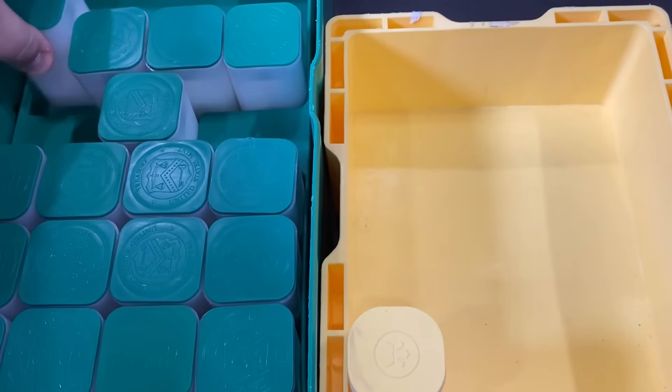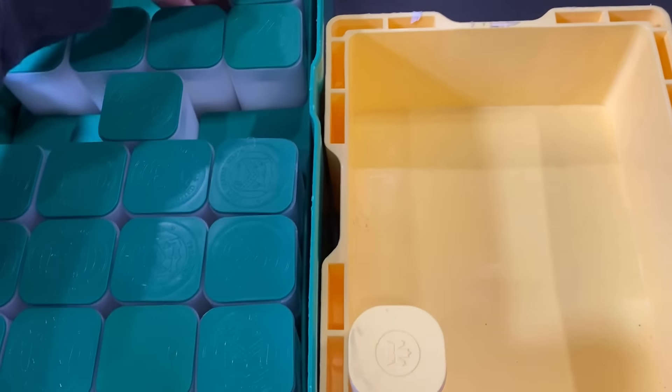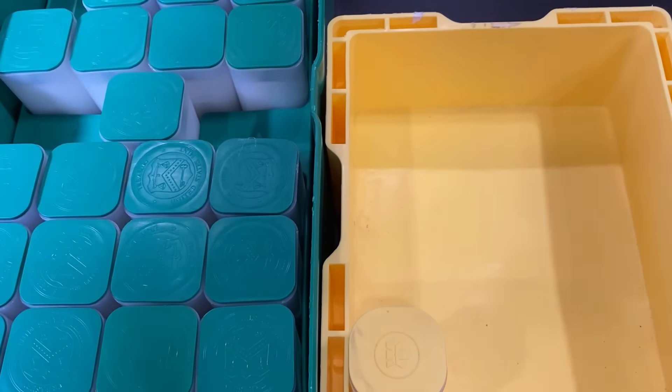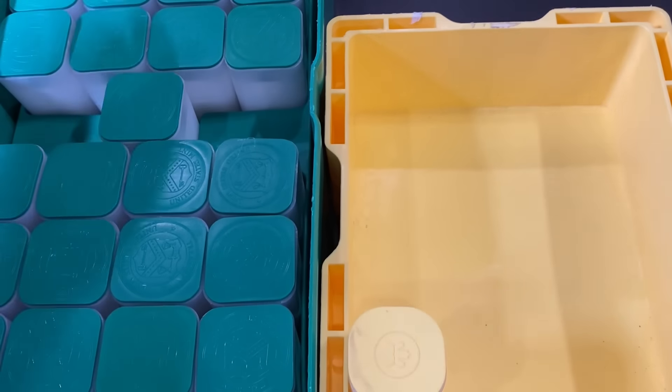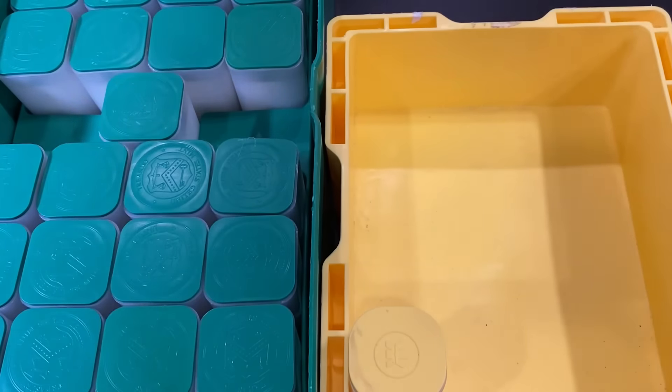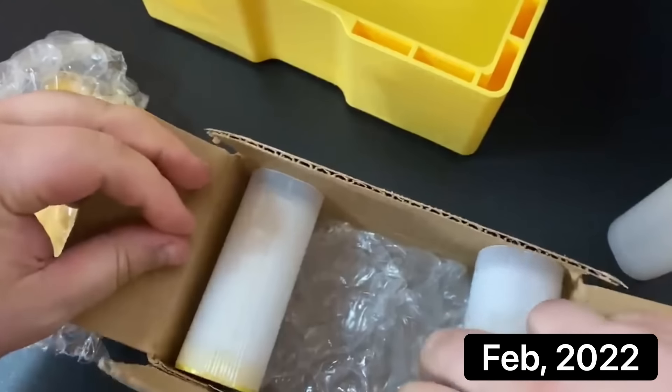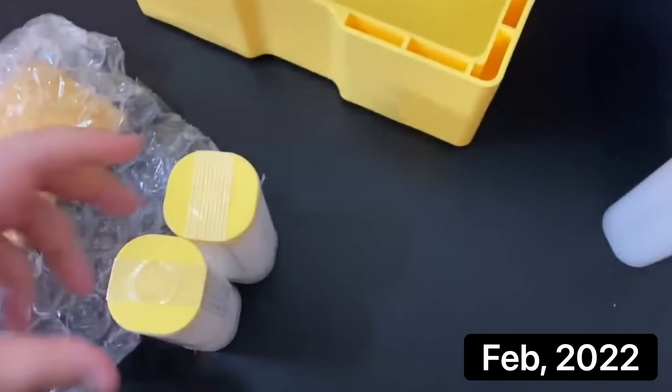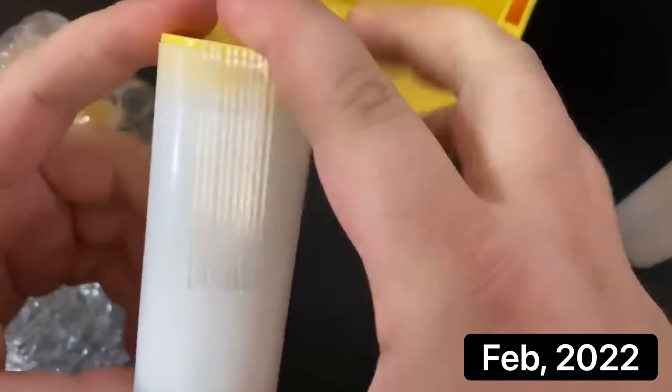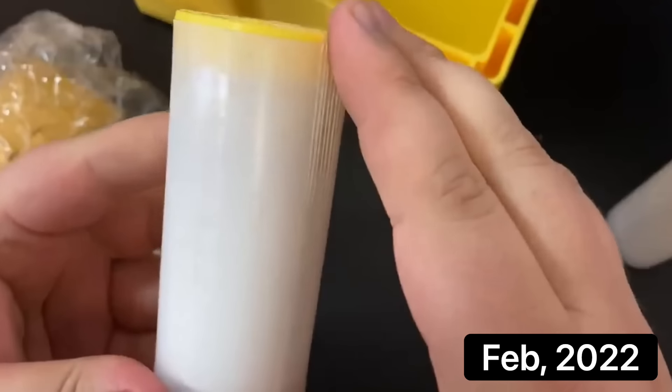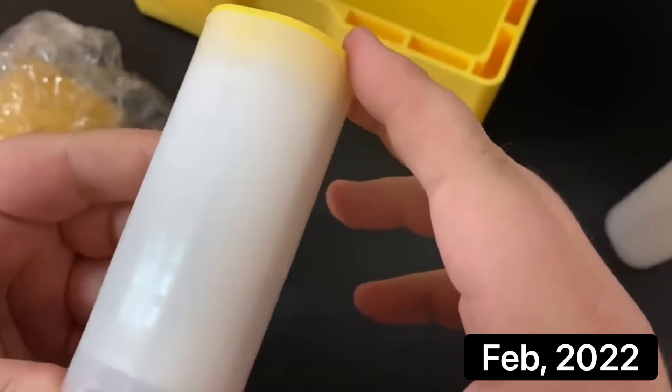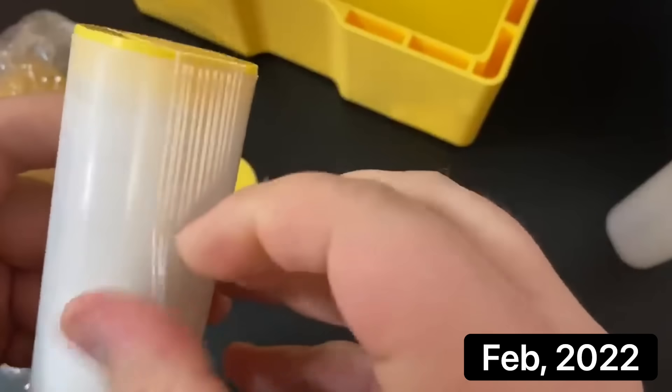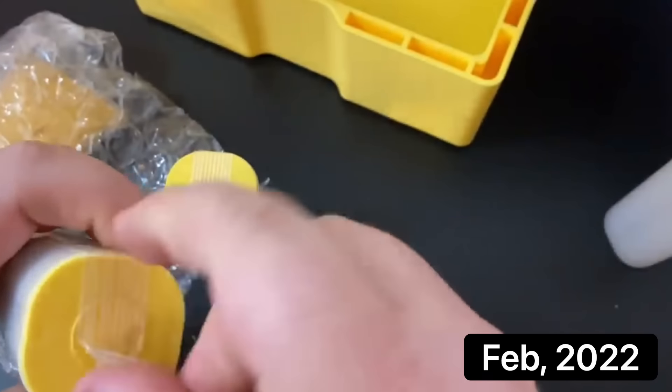And after I completed the American Silver Eagle monster box, I moved on to a few other stacking goals, and eventually I got around to stacking the Maple Leafs. And I started stacking these about two years ago. In fact, here's a clip from when I first started my Maple Leaf monster box. Oh yeah, we got a tube there and another tube—two tubes—and they are full of Canadian Silver Maple Leafs. And, you know, I do want to address one question that I got—I think it was in my last live stream.